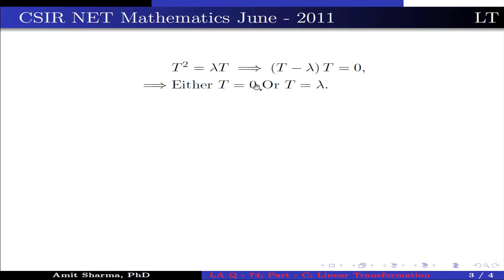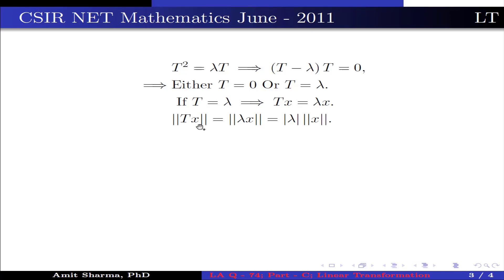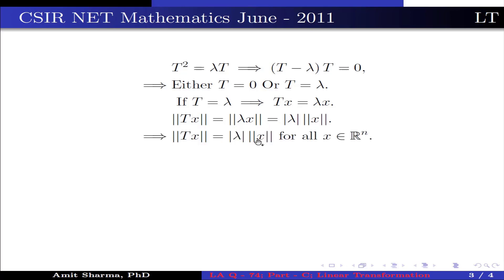If we take T = λI, this implies Tx = λx. Taking the norm on both sides, we get ||Tx|| = ||λx|| = |λ|·||x||. This implies ||Tx|| = |λ|·||x|| for all x ∈ R^n. Therefore option 1 is true.